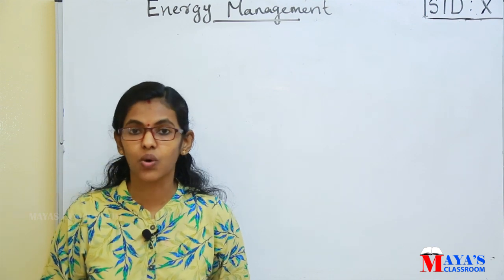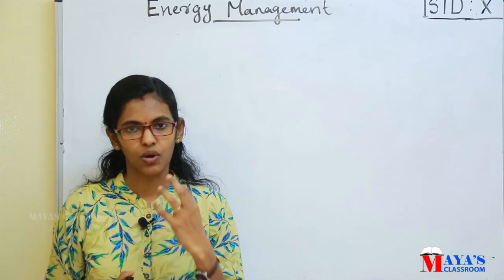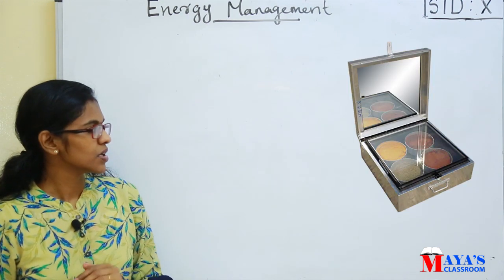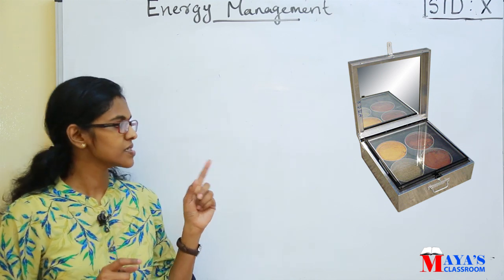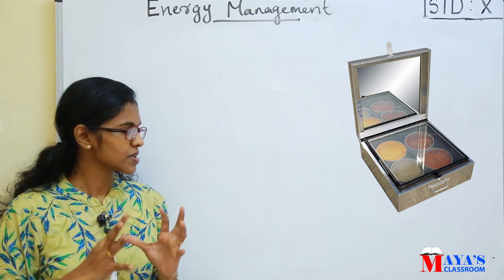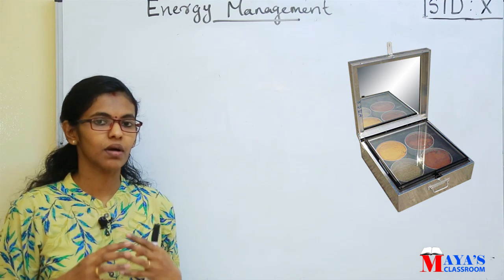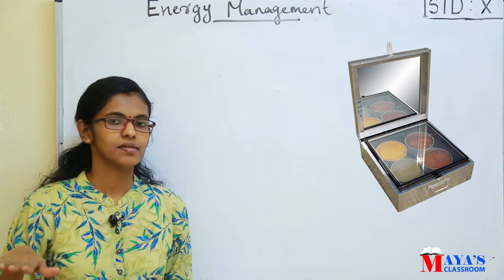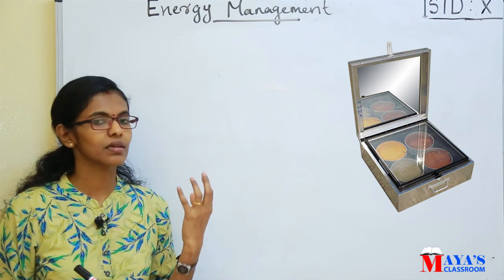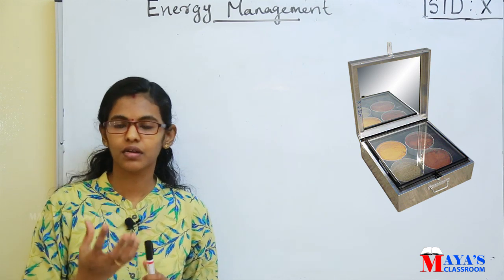Now we look at a solar cooker. This device uses sunlight for cooking and is called a solar cooker. It is a box-type solar cooker. It has a small box with black paint on a black interior surface, and it has a glass lid on top.